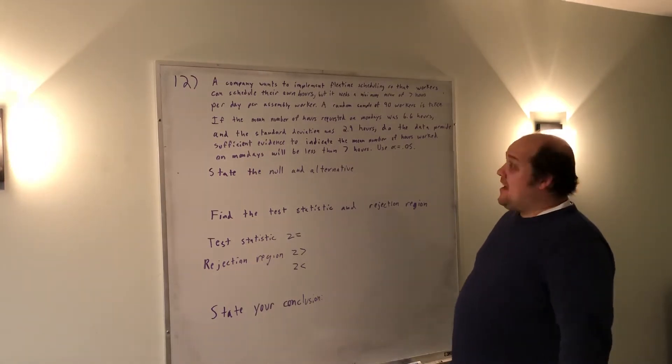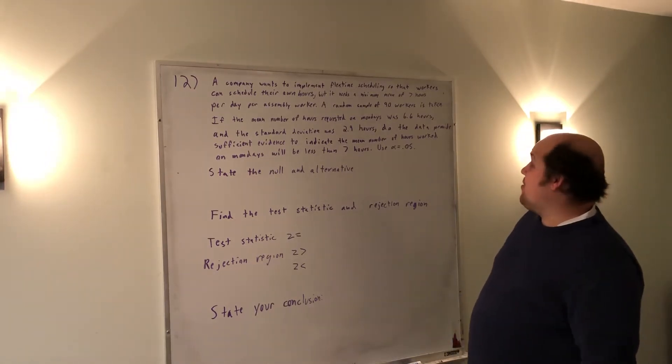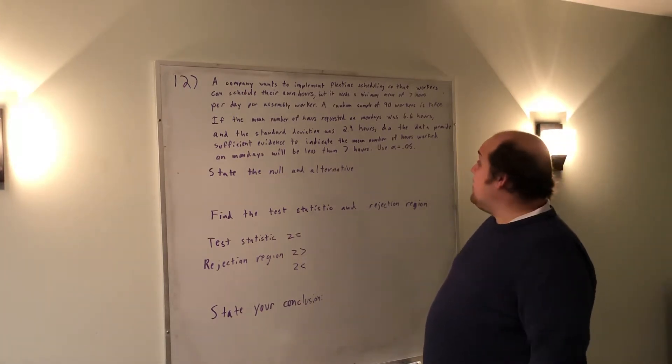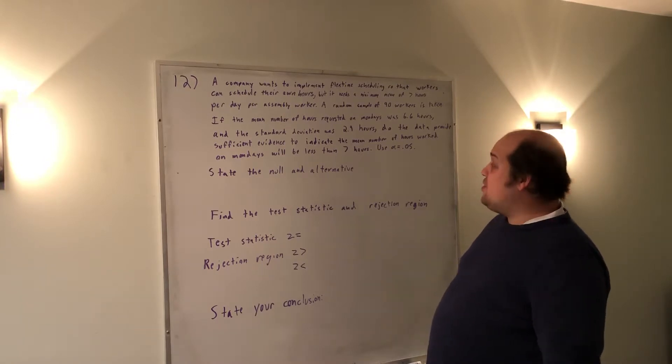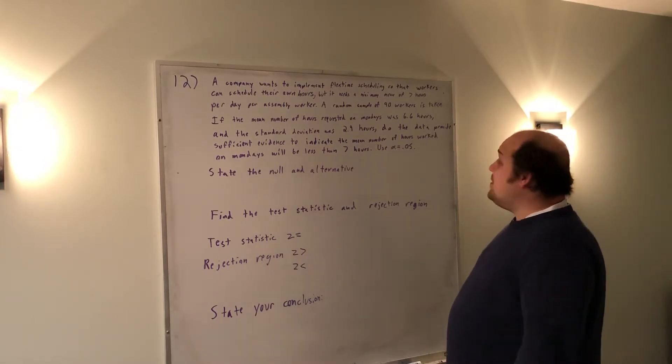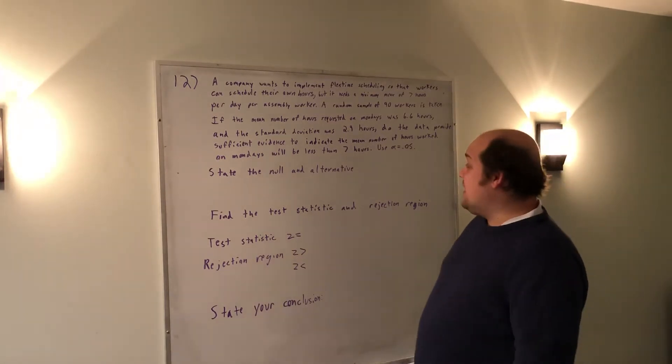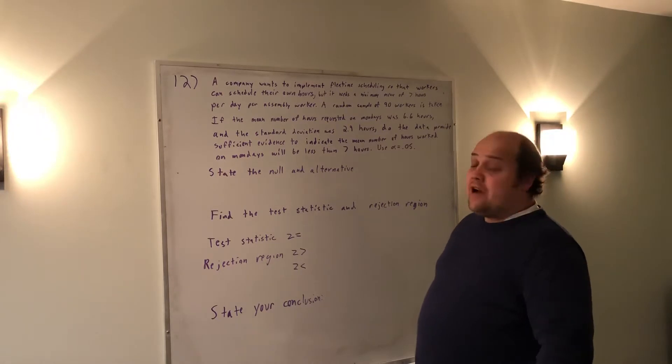A random sample of 90 workers is taken. If the mean number of hours requested on Mondays was 6.6 hours and the standard deviation was 2.9 hours, do the data provide sufficient evidence to indicate the mean number of hours worked on Mondays will be less than seven hours? Use alpha equals 0.05.